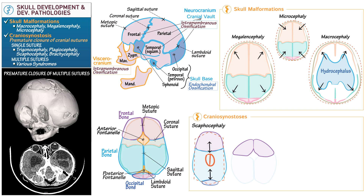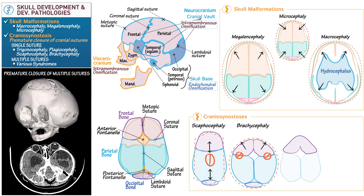Next, brachycephaly results from bicoronal synostosis. In this instance, the skull cannot develop normally along the sagittal plane; instead it manifests with a wide, short skull. Again, in accordance with Virchow's law, the skull develops in parallel to the plane of the synostosis. Trigonocephaly is secondary to metopic synostosis, which results in a failure of frontal outward development, manifesting with a pointed forehead. The eyebrows may appear pinched.